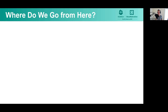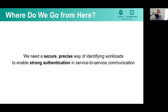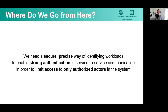So now the question is: where do we go from here? How do we actually achieve these security objectives? We need a new model — the existing network-based model is not really working the way we want it to. What we really need is a secure, precise way of identifying workloads to enable strong authentication in service-to-service communication, in order to limit access to only authorized actors in the system. This is the mission statement — what we're trying to achieve to satisfy the business security challenges we've identified.